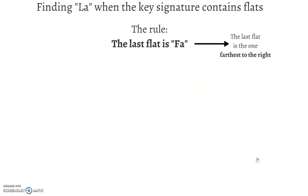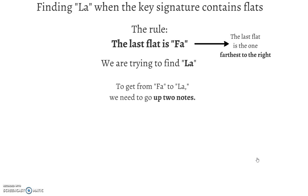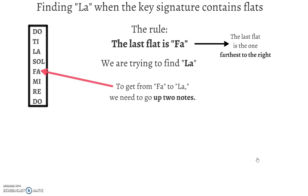The last flat is Fa. The last flat in a key signature is always Fa — the one farthest to the right. We are still trying to find La, but now we're starting from Fa instead of starting from Ti. To get from Fa, our last flat, to La, we have to go up two.